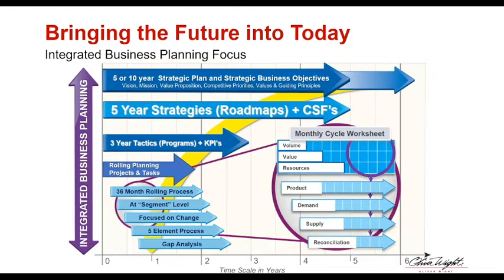For most businesses it's not that they have a bad strategy — it's that they don't have a mechanism to deploy it and then ask what their current plans say is going to happen, and what they can do to close any gaps. IBP provides that structured monthly vehicle to face the truth of bottom-up plans. That doesn't mean immediately changing strategy, but it does ask: if we believe the strategy is still correct, what do we need to do to the business to ensure we deliver it?